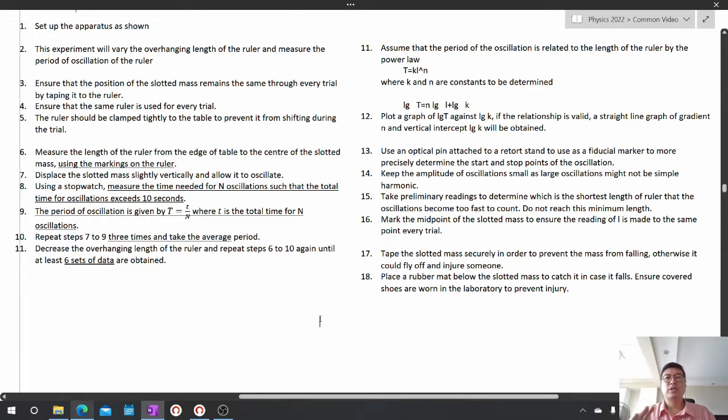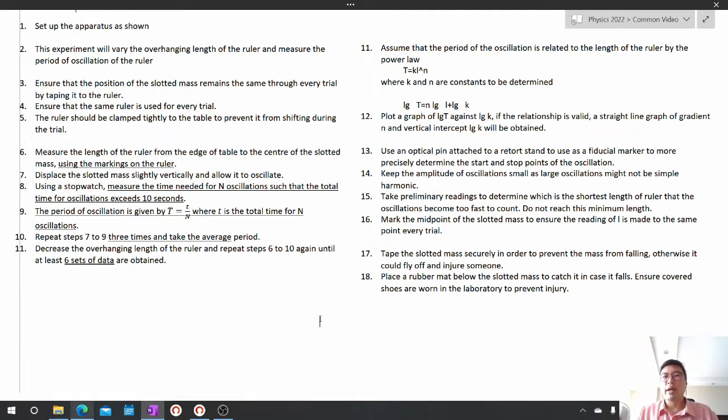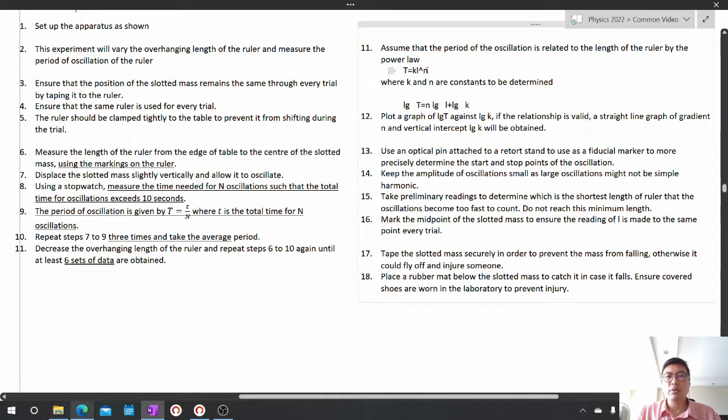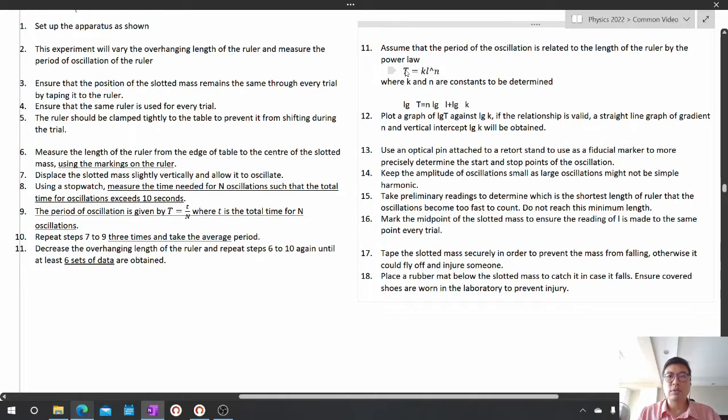Notice that in the question, we're not given any relationship. Since we're not given any relationship, we are going to use power law T is equal to kL to the power of n, where k and n are constants to be determined. Whenever no equation is given, we will make our own equation using the power law.